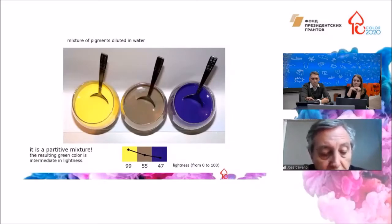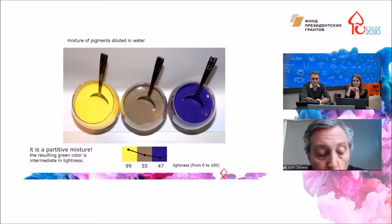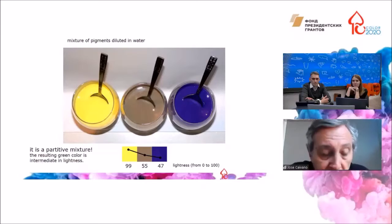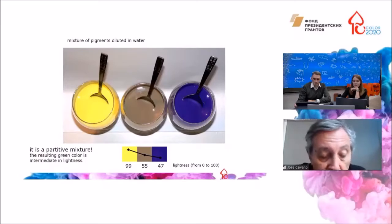For pigmentary mixing, there are cases in which the subtractive rule is not fulfilled. These are yellow and blue opaque pigments diluted in water. At the center, they mix in green, but this color is not darker. Instead, it has an intermediate lightness between yellow and blue, as we can see in the diagram with the numerical values below.